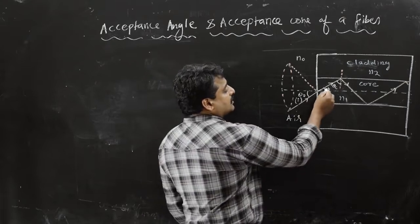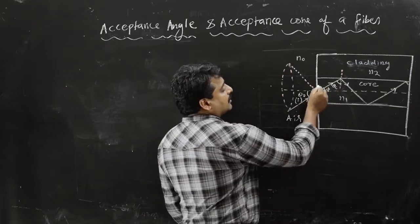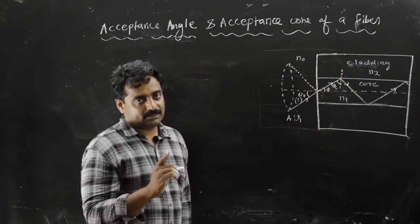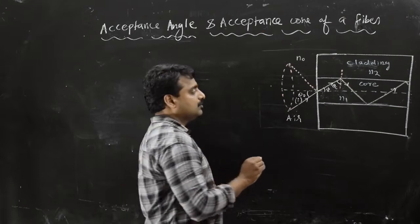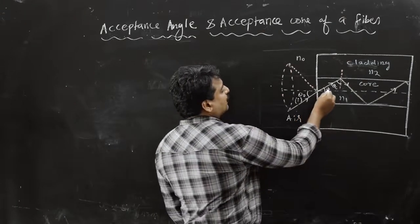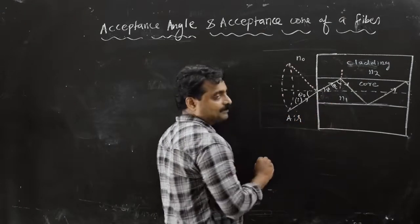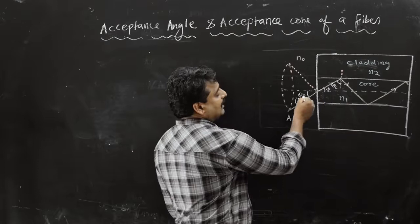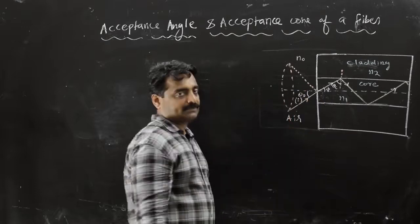This is known as the angle of refraction, otherwise known as phi. So phi is the angle of refraction now, and theta 0 is the angle of incidence.